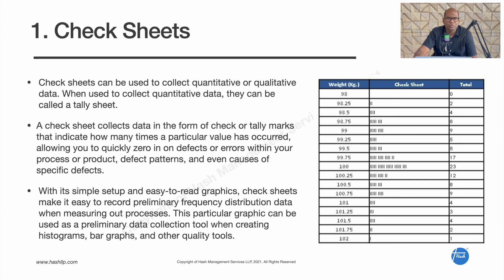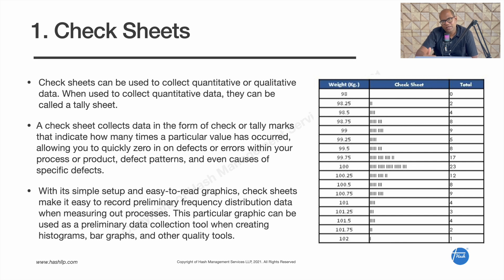The first tool is the check sheet. A check sheet is a basic tool used to collect qualitative or quantitative data. When used to collect quantitative data, it can also be called a tally sheet. It is simply a form with tick marks or check marks that indicate how many times a particular activity has been done or how many times a particular issue has been found. It is very simple to set up, easy to read, and very user-friendly.